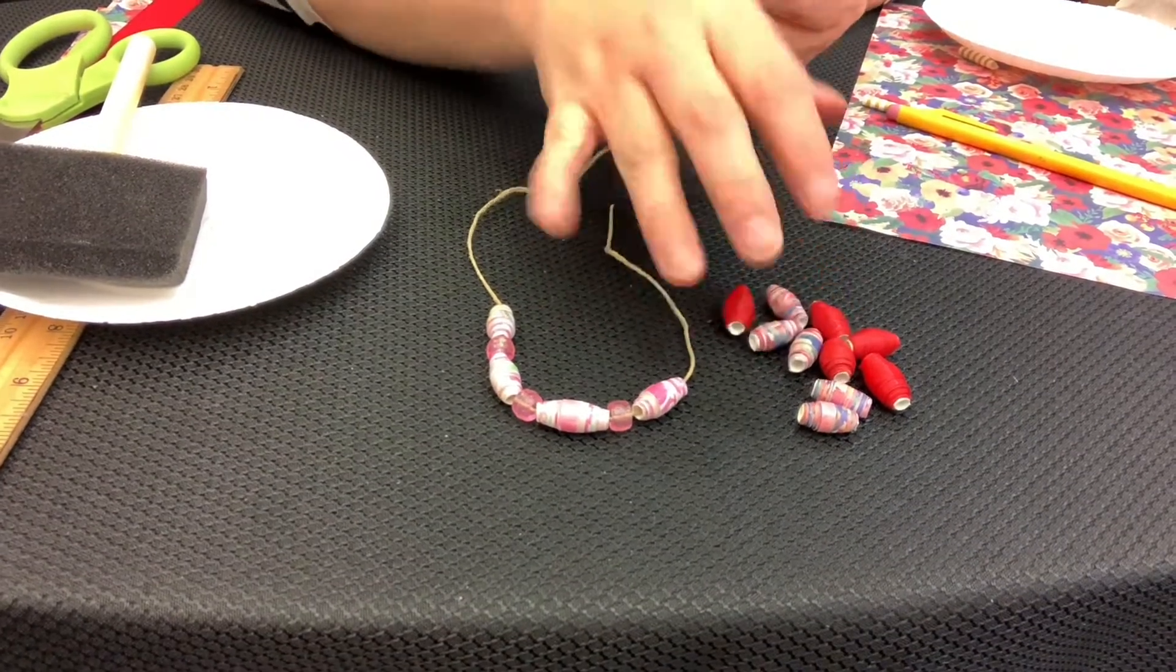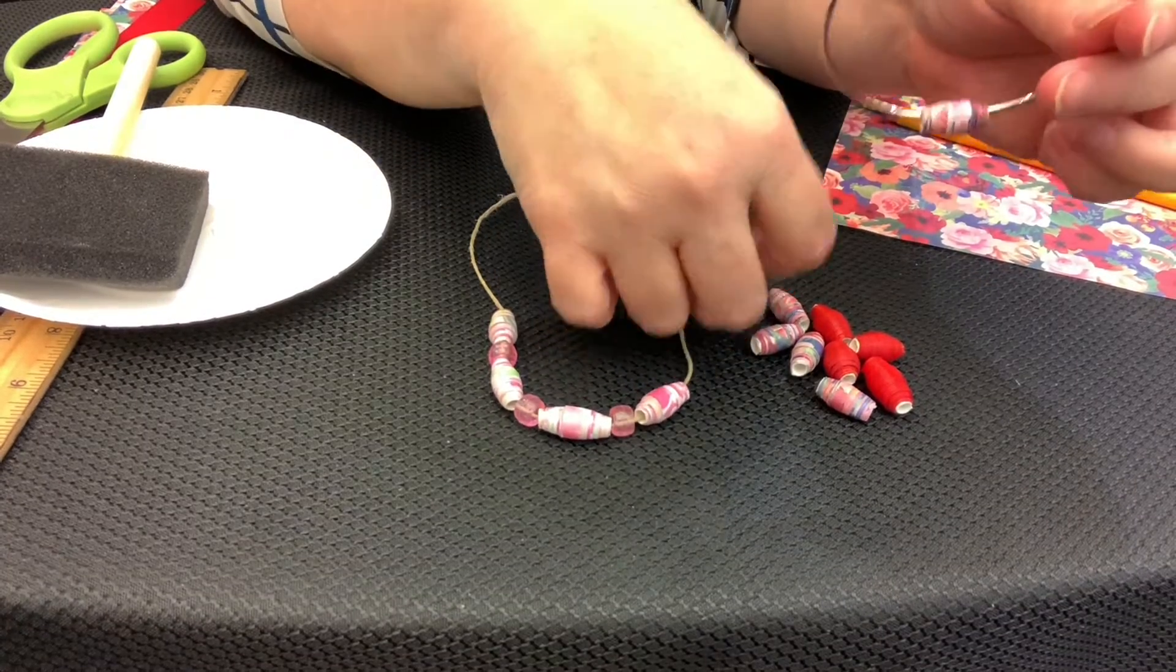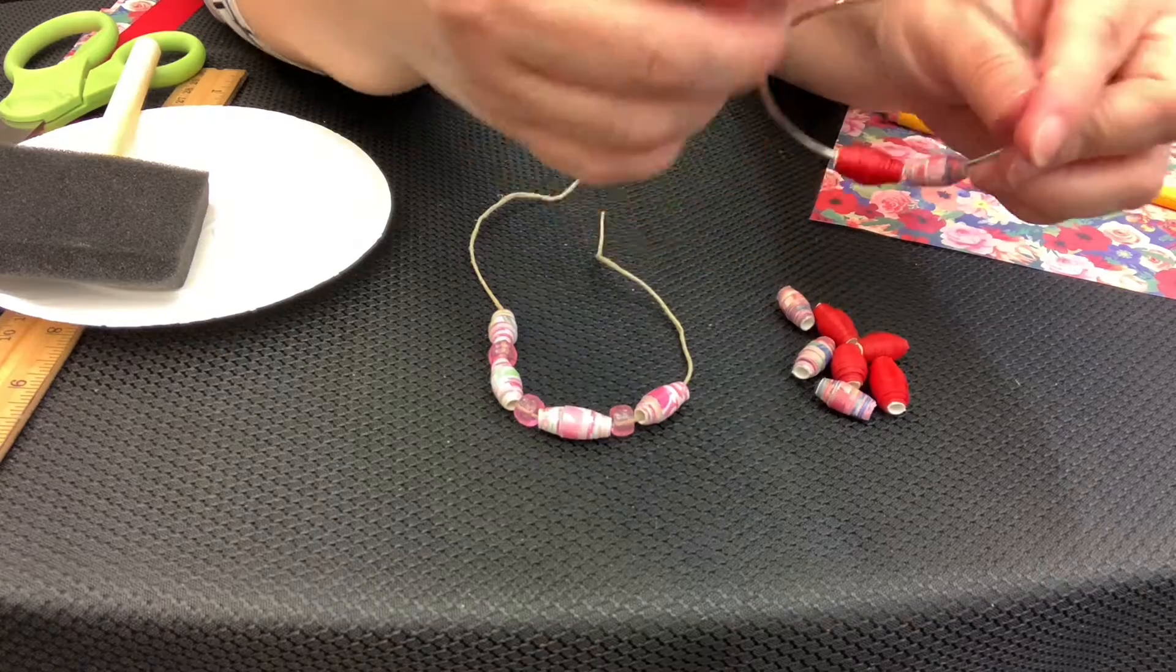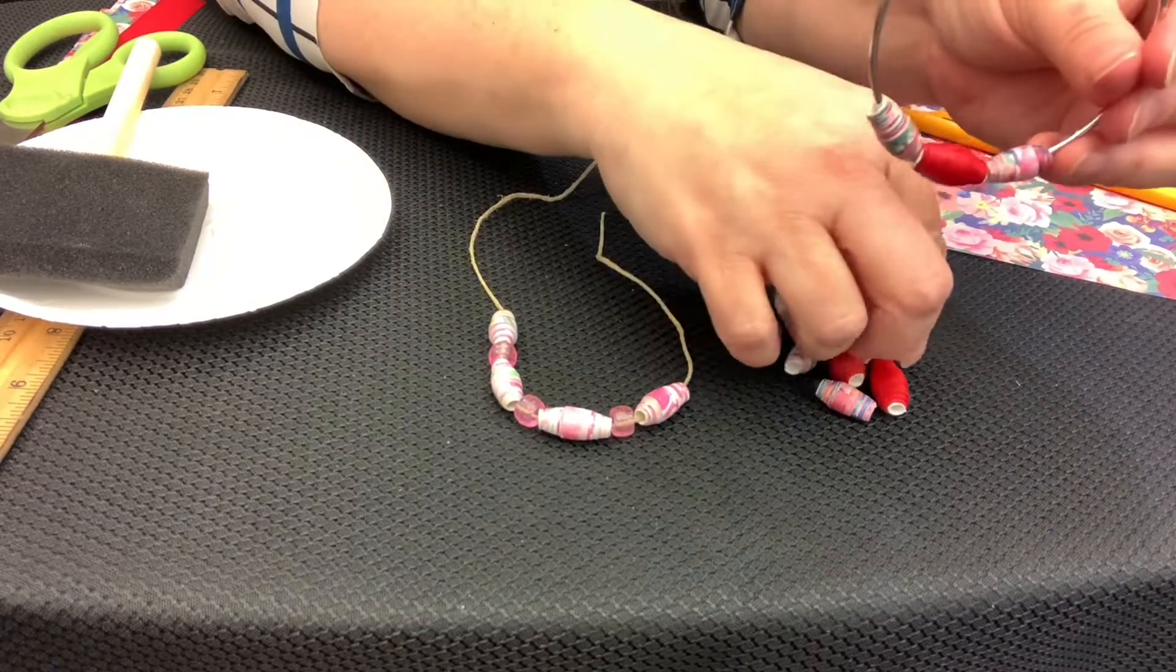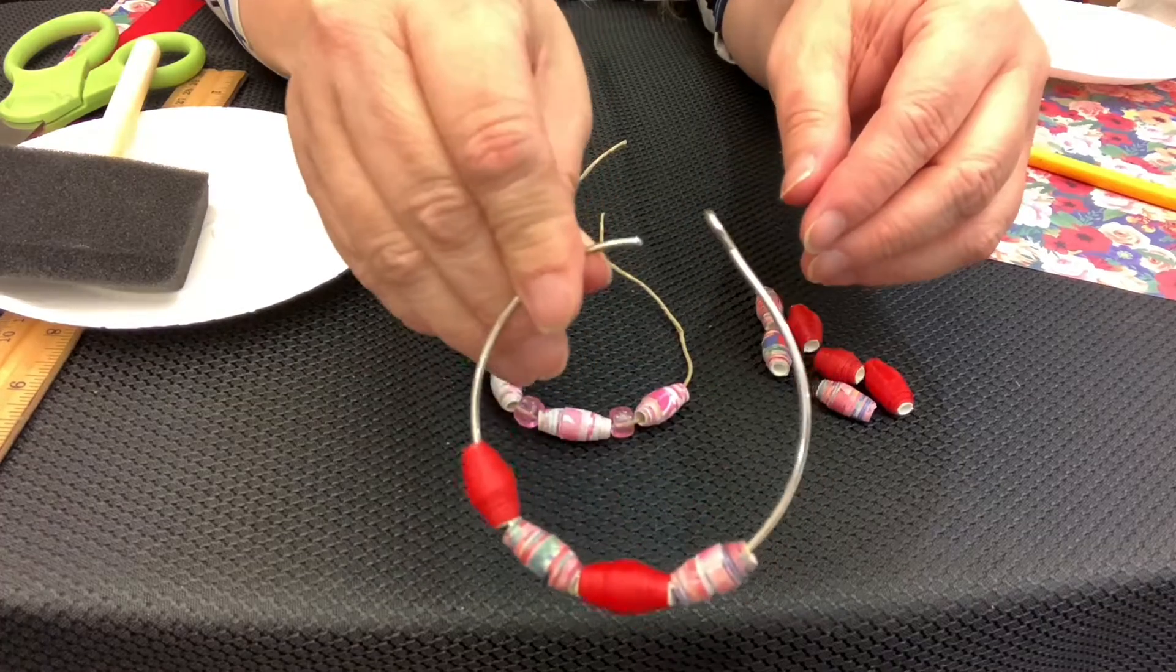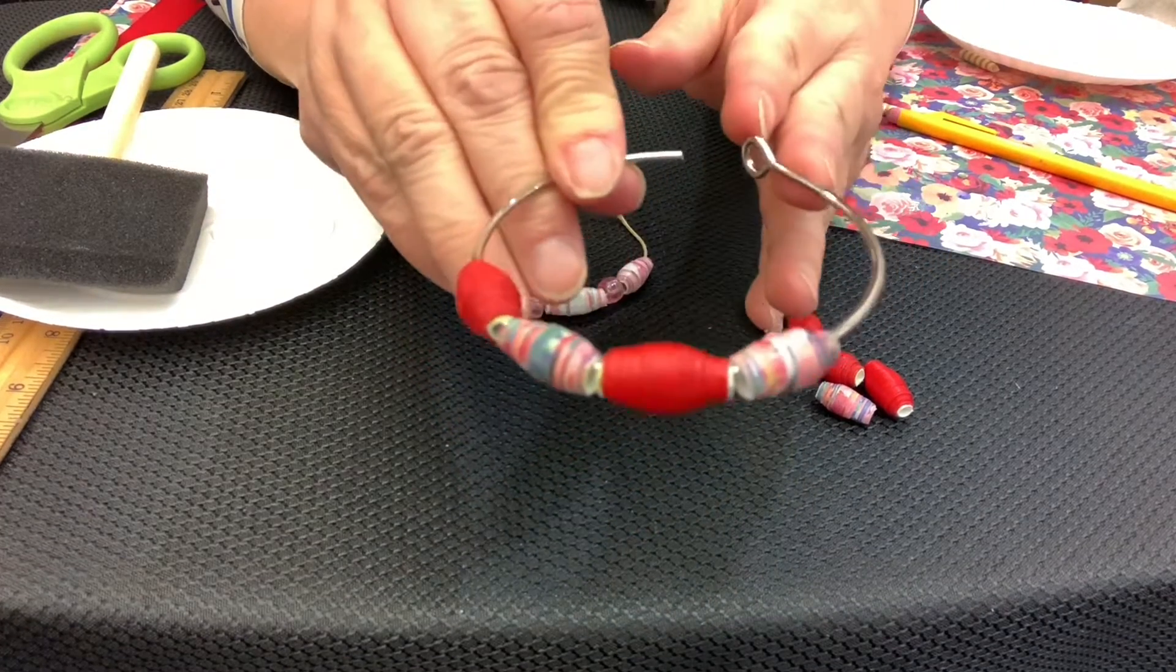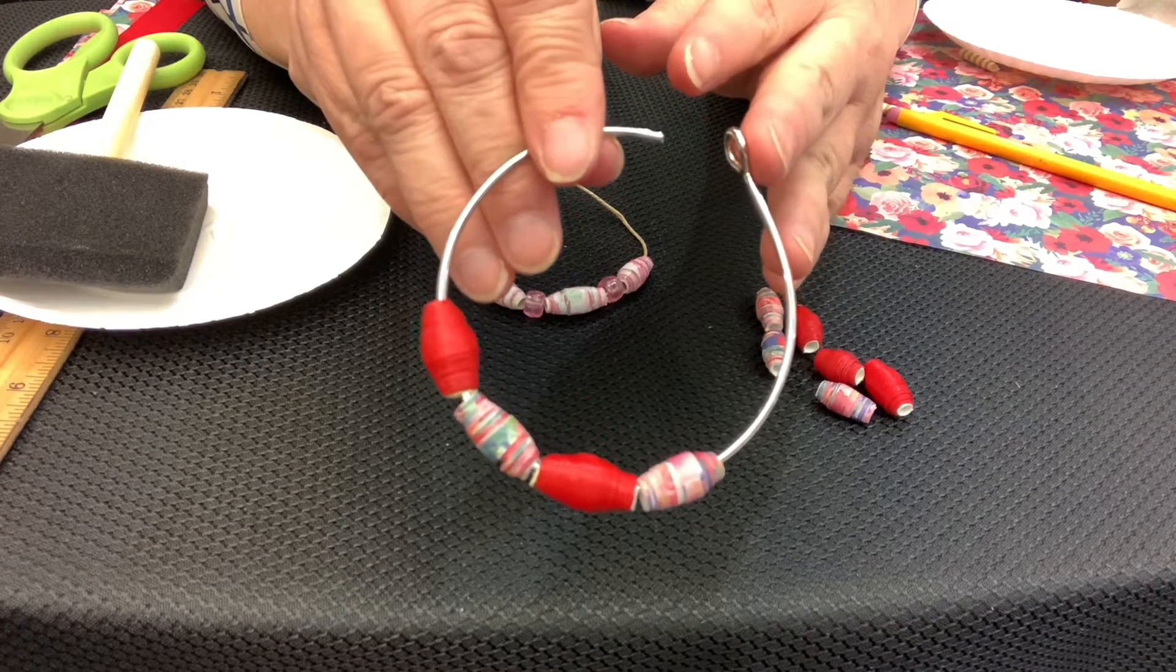So once you have a group of beads, you could either use some twine or a bangle. You can make necklaces or bracelets or anything you wish. You can also add plastic beads to it like I did on one of them. But there you go, there are your paper beads.